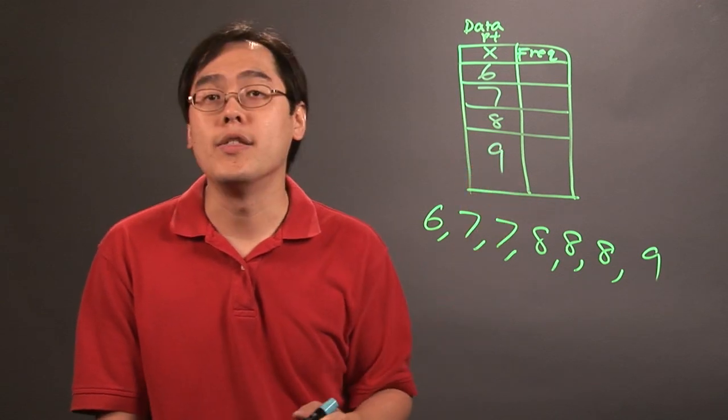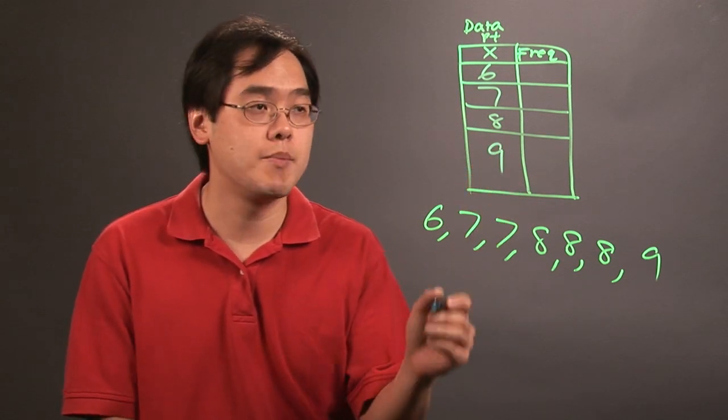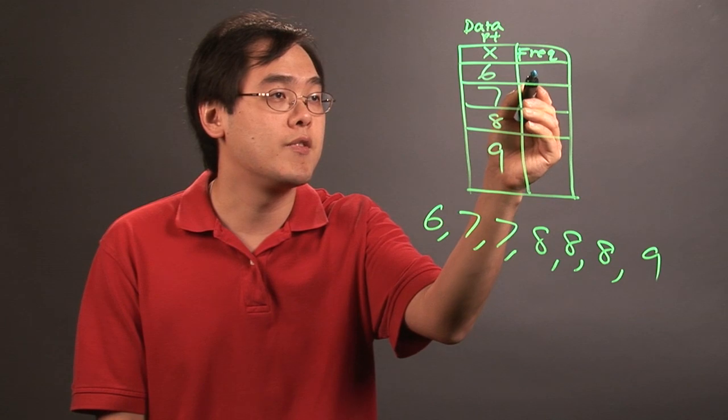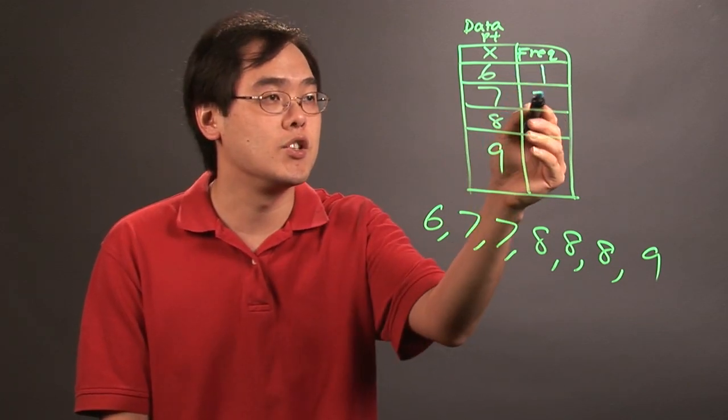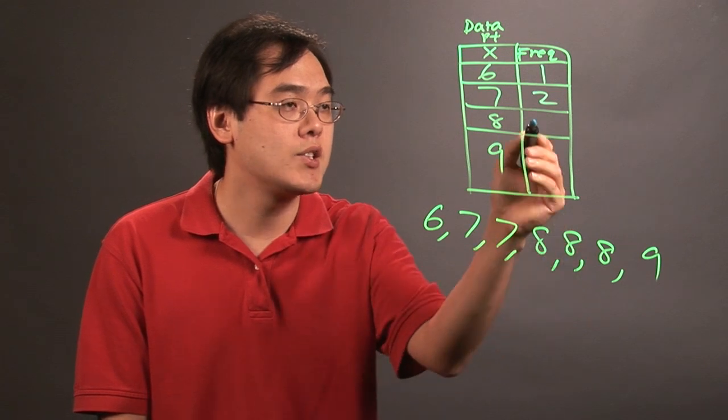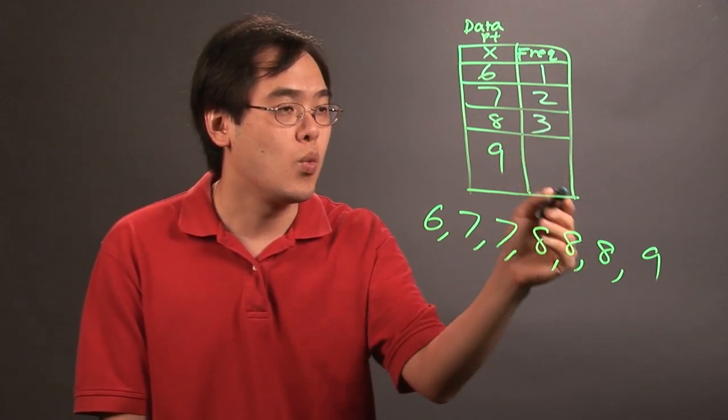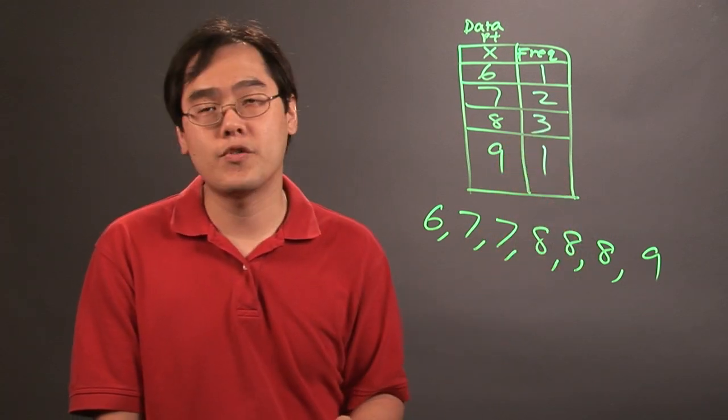And then you simply write how many times each one shows up. So you only see one six, so the frequency of six is one. You see two sevens, so the frequency of seven is two. You see three eights, so frequency is three, and then one nine, so frequency of one.